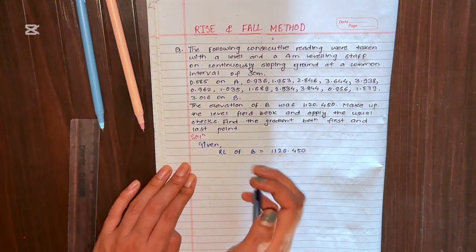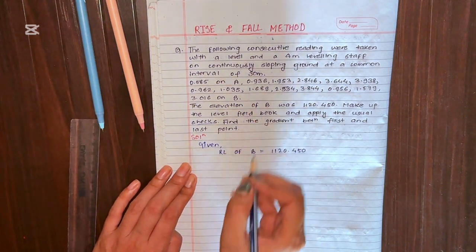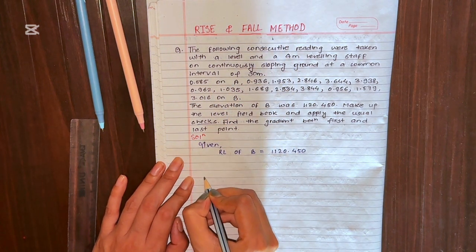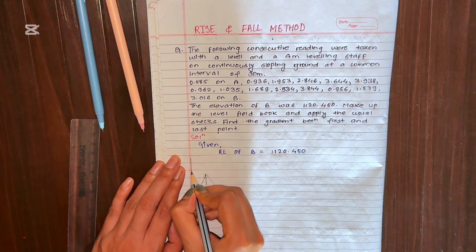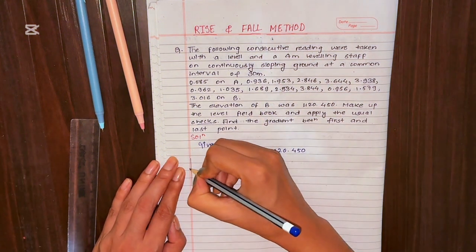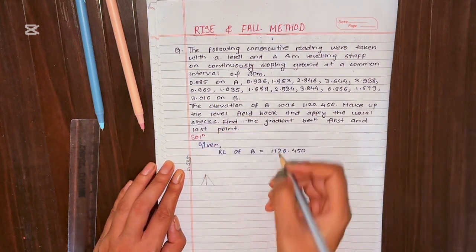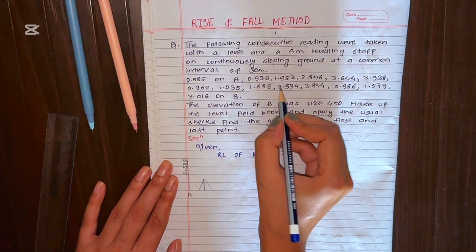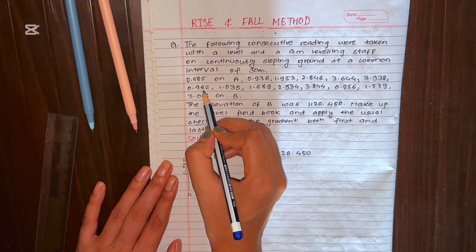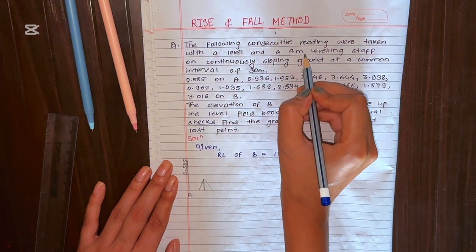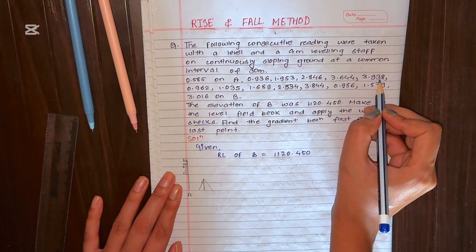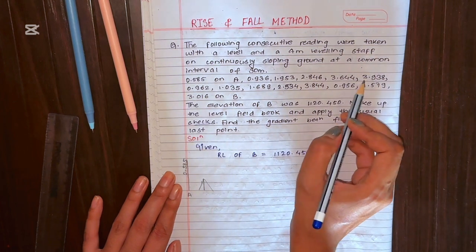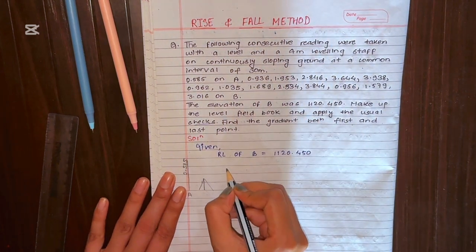Now we will draw a rough sketch of the field while taking the readings. The first reading is on station A, which is 0.585 — this is the backsight. Since the leveling staff is 4 meters, it can only take readings up to 4 meters. After that point, the instrument must be changed so we can continue taking readings. The next four readings are the intermediate sights before the instrument is changed.